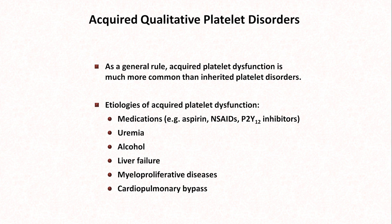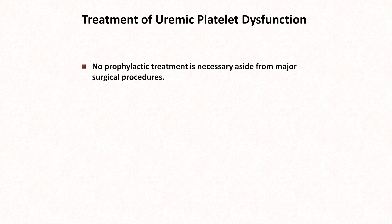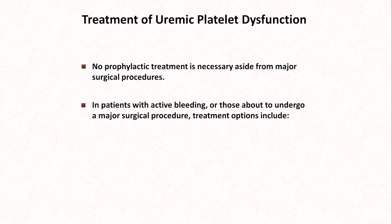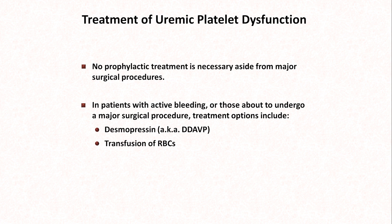Importantly, there is no specific degree of renal dysfunction at which bleeding risk starts to increase. The mechanism of uremic platelet dysfunction is complex and believed to be partially dependent on circulating toxins; however, urea itself is likely not one. When it comes to treatment of uremic platelet dysfunction, prophylaxis against bleeding is unnecessary aside from major upcoming surgical procedures. In patients experiencing active bleeding or about to undergo a major procedure, the most conventional treatment option is desmopressin. In addition to directly treating the blood loss, transfusion of red blood cells has been shown to improve tests of platelet function. Cryoprecipitate, which contains von Willebrand factor and fibrinogen among other coagulation factors, is sometimes used in life-threatening bleeding associated with uremia.